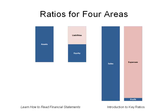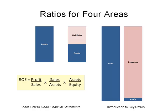Therefore, return on equity measures profits compared to sales, sales compared to assets, and assets compared to equity. Return on equity is equal to profit divided by sales, times sales divided by assets, times assets divided by equity. The sales and the assets cancel out in the multiplication, and you're left with profit divided by equity.